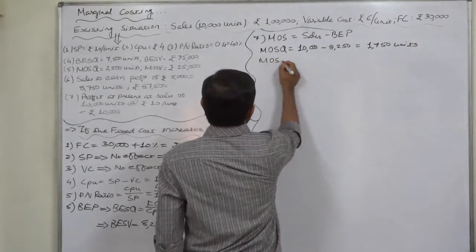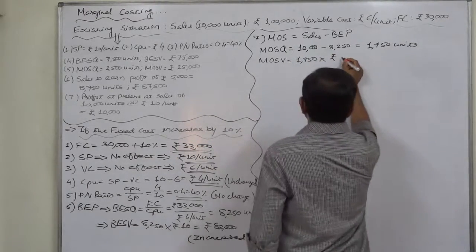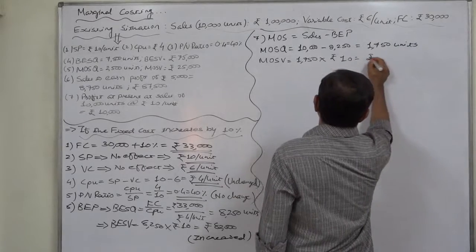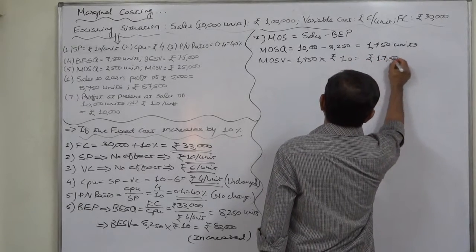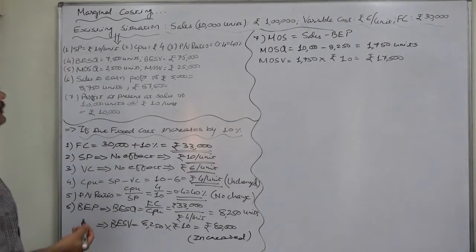If we calculate margin of safety value, it will be 1,750 units into unchanged selling price of rupees 10, so it will be rupees 17,500. Again, it is less than the existing amount of rupees 25,000.